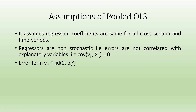The assumptions of pooled OLS are: it assumes regression coefficients are the same for all cross sections and time periods; regressors are non-stochastic, meaning errors are not correlated with the explanatory variables; and error terms are identically and independently distributed with mean zero and constant variance.